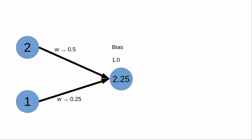Here I have a very basic neural network system. It has two inputs — each circle has a value. This one has a value of two and this one has a value of one. Each of these is going to multiply by a weight: this one is 0.5 and this weight is 0.25.